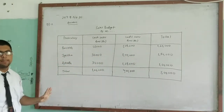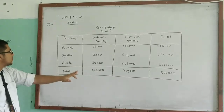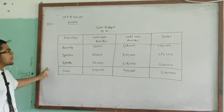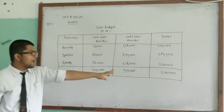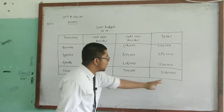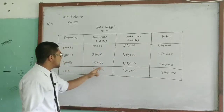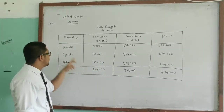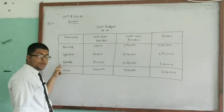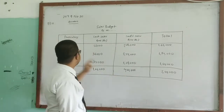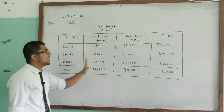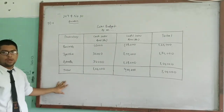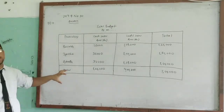The total sales in cash is around Rs. 30,000, and the credit sales is around Rs. 40,000. Without all the data we cannot complete the full sales budget.